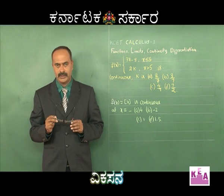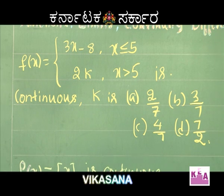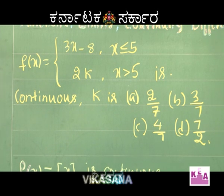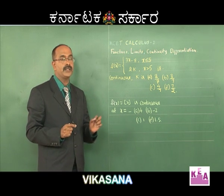The next problem: f(x) equals 3x minus 8 for x less than or equal to 5, and 2k for x greater than 5. If f is continuous, then k equals — we have four options: 2/7, 3/7, 4/7, and 7/2. This is a simple problem taken from your previous CET paper.